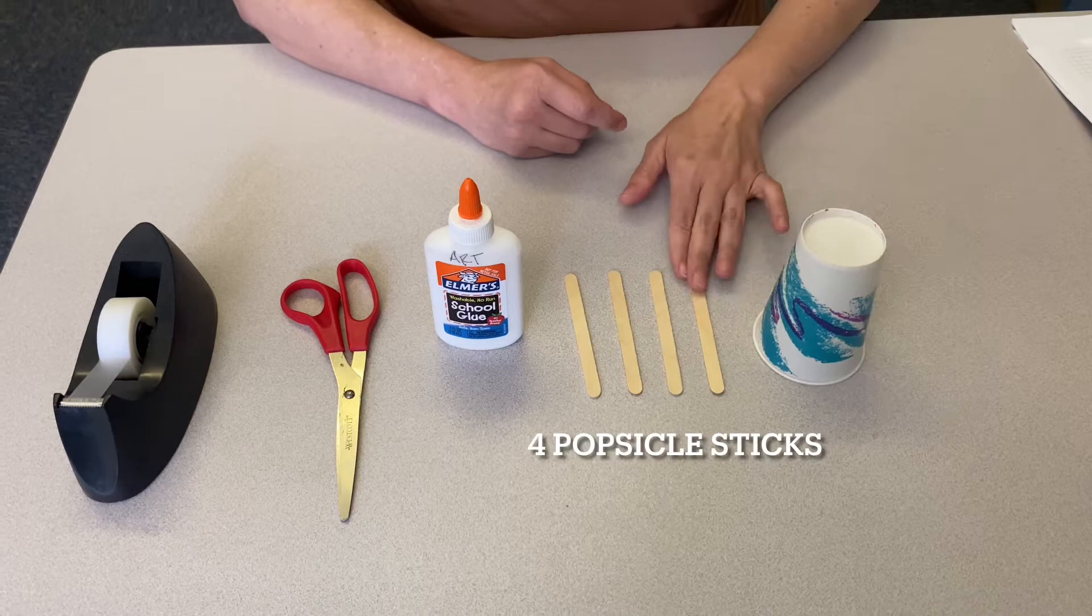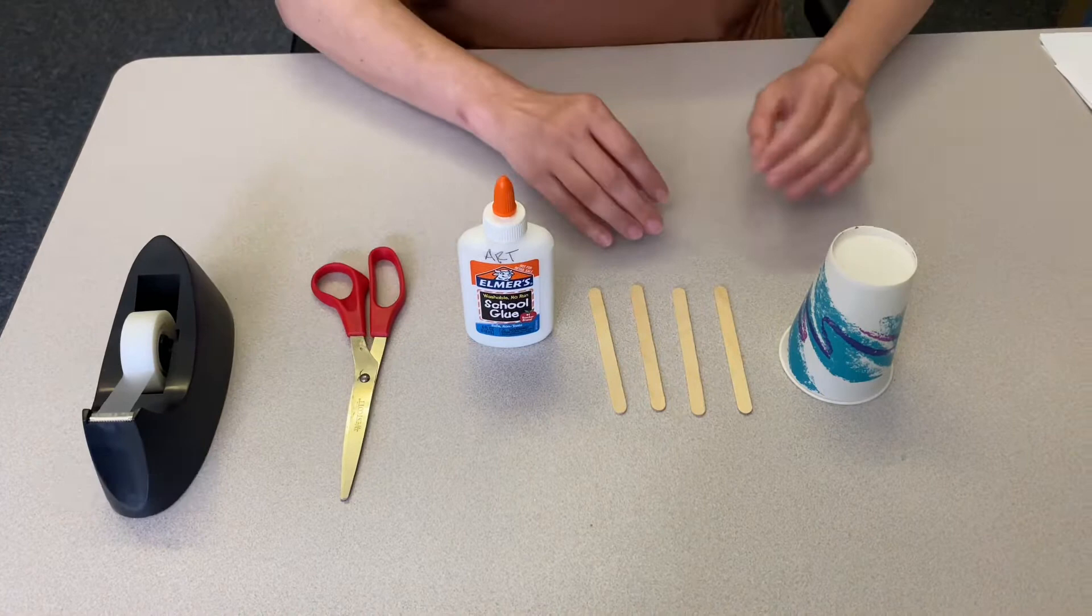We're going to need a cup, four popsicle sticks, Elmer's glue, scissors, and tape.